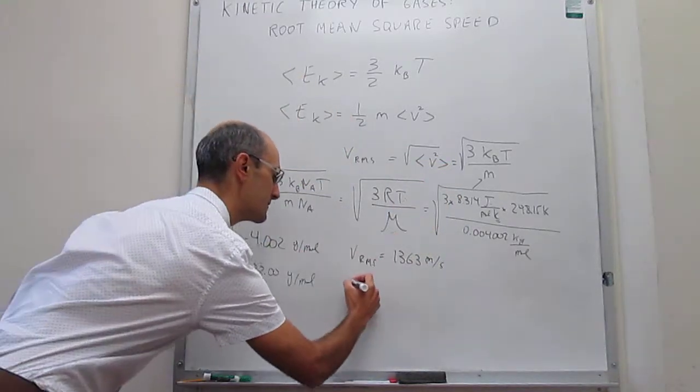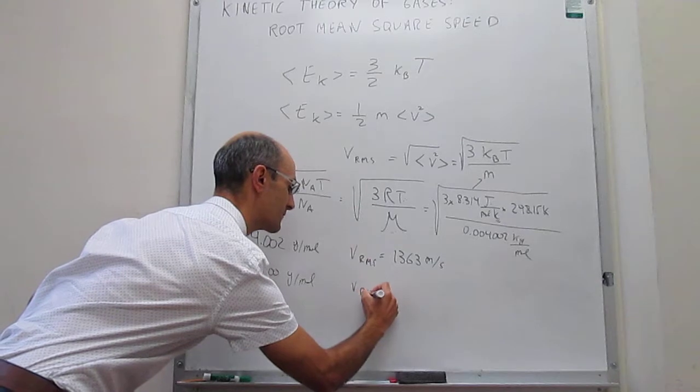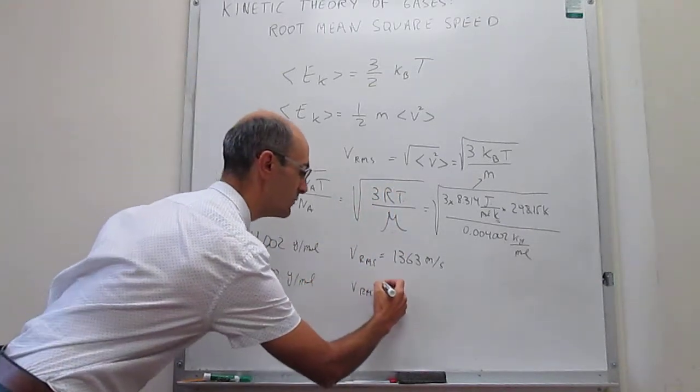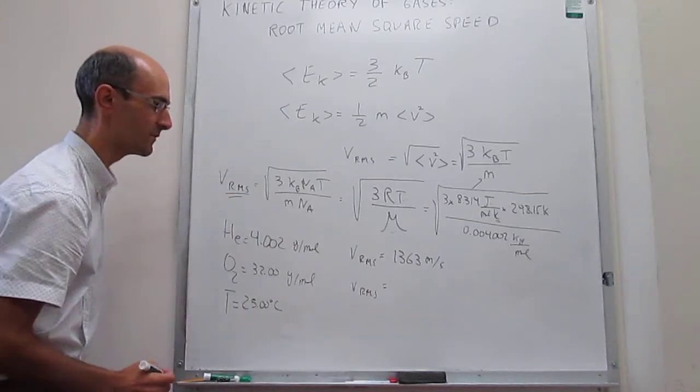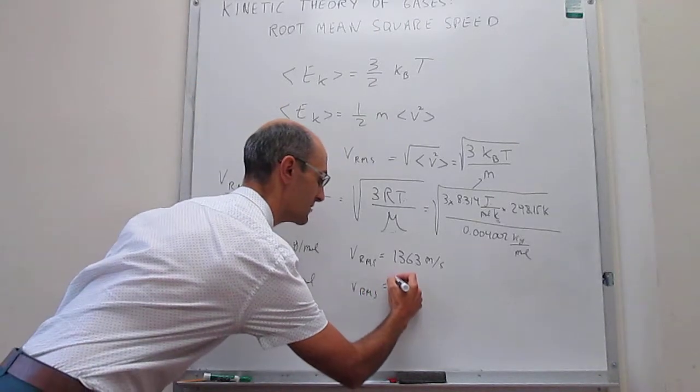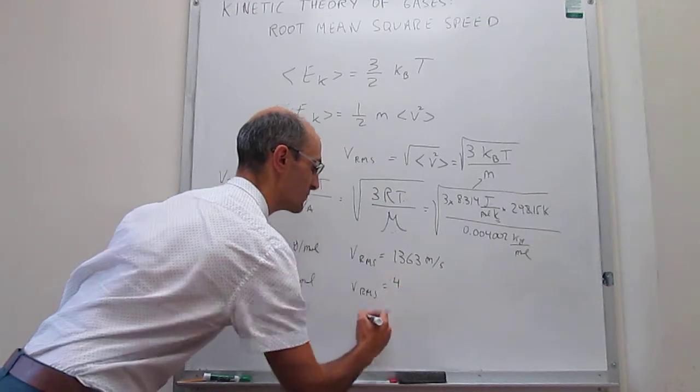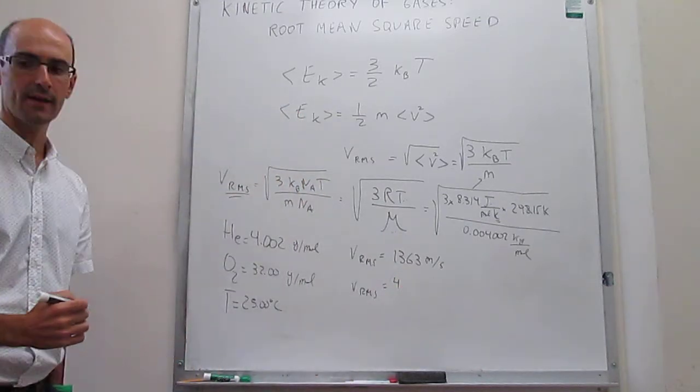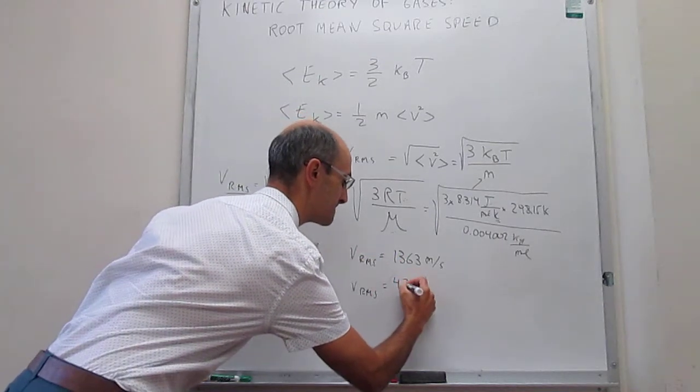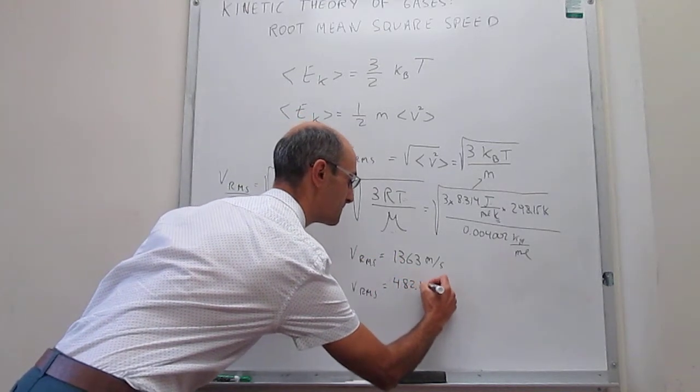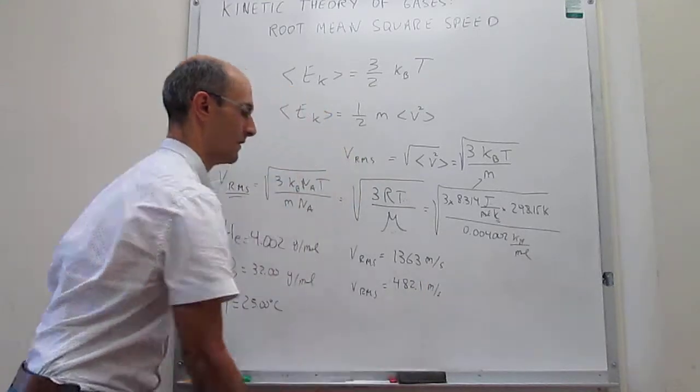And then for oxygen, if we were to repeat this calculation for oxygen, same temperature, different mass, we would find that of course this velocity has to be lower because oxygen is more massive. And this velocity is going to be equal to 482 meters per second.